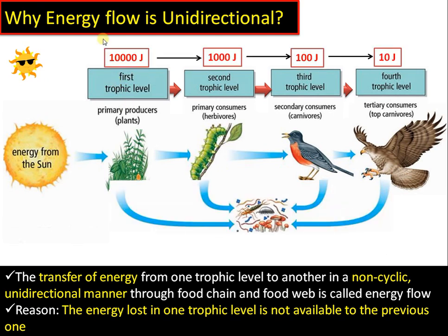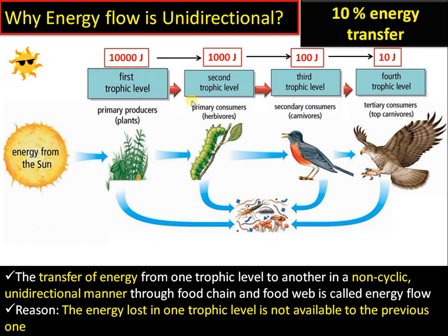Suppose 10,000 joules of energy is fixed at the first trophic level by green plants. Only 1,000 joules is available at the second trophic level, only 100 joules at the third trophic level, and only 10 joules at the fourth trophic level. Only 10% of energy is transferred at each trophic level — 90% of energy is lost. This is called the 10% energy transfer law.